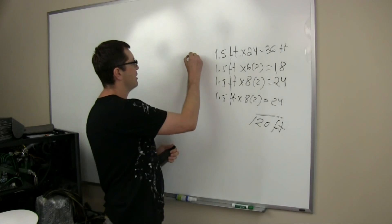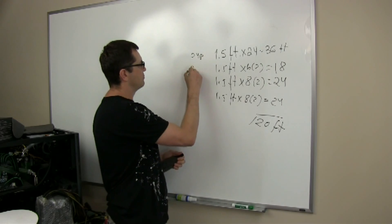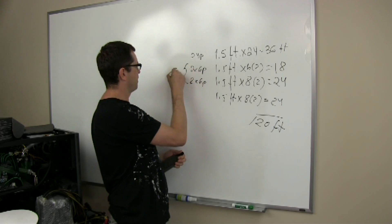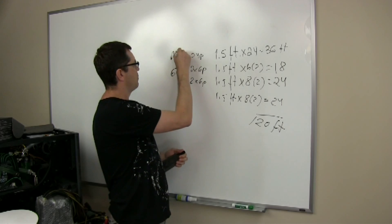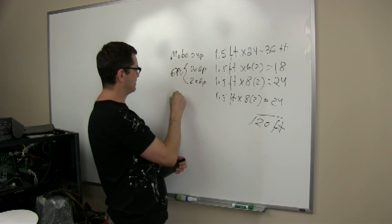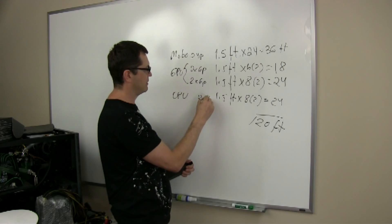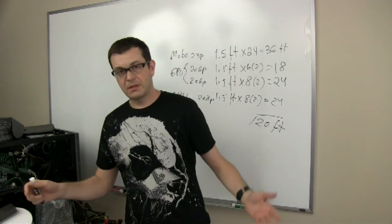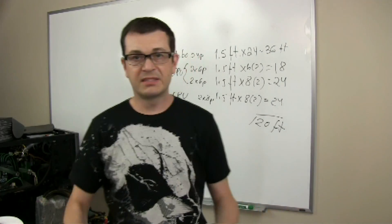And this covers 24-pin, twice 6-pin for two cards, this is GPU, this is mobo, and this is CPU, twice by 8. So that's pretty much like this.